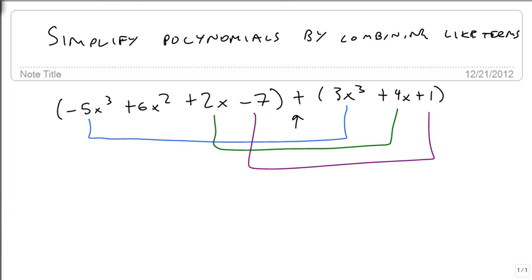and we're going to add the constants together. And that gives us minus 5x cubed plus 3x cubed is minus 2x cubed. 6x squared plus nothing just stays as 6x squared. 2x plus 4x is 6x. And minus 7 plus 1 is minus 6.